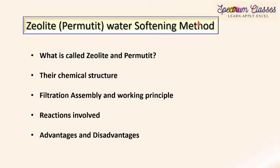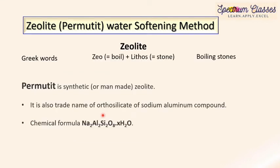Hello everyone, welcome to Spectrum Classes. This video is in continuation with the water chemistry videos. Here we are going to discuss the zeolite permutit water softening method. This method is an external water softening method done outside the boiler. We will discuss: what is zeolite and permutit, are they the same or different, their chemical structure, how to draw the chemical structure for exam purposes, filtration assembly and its working principle, reactions involved, and advantages and disadvantages.